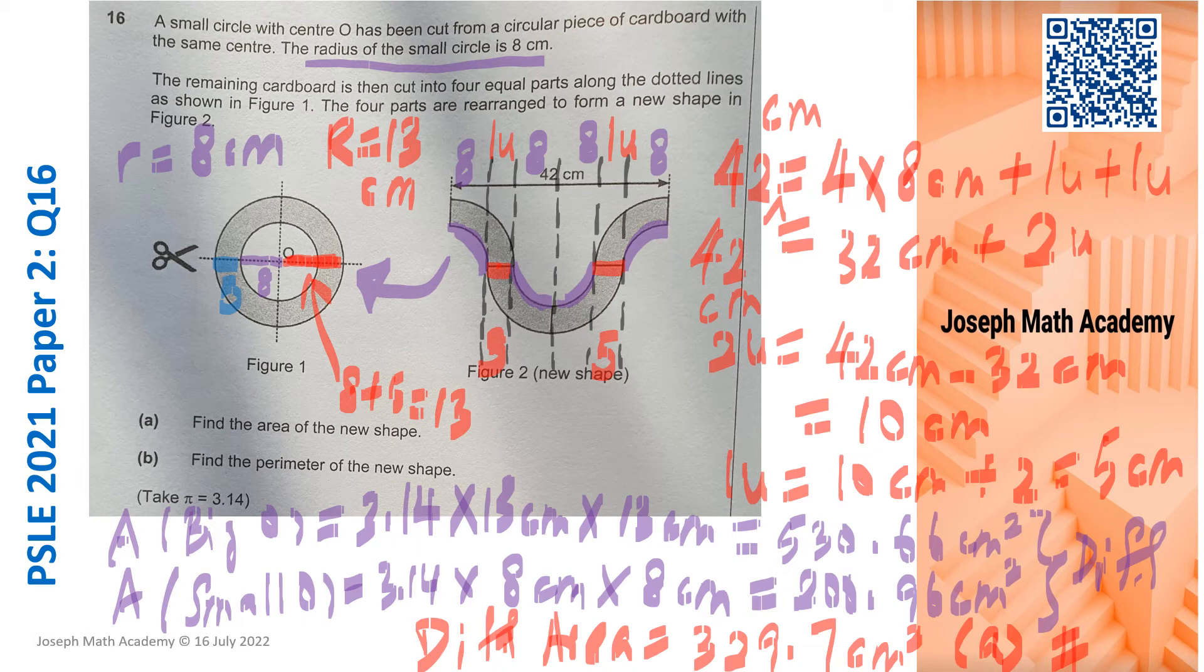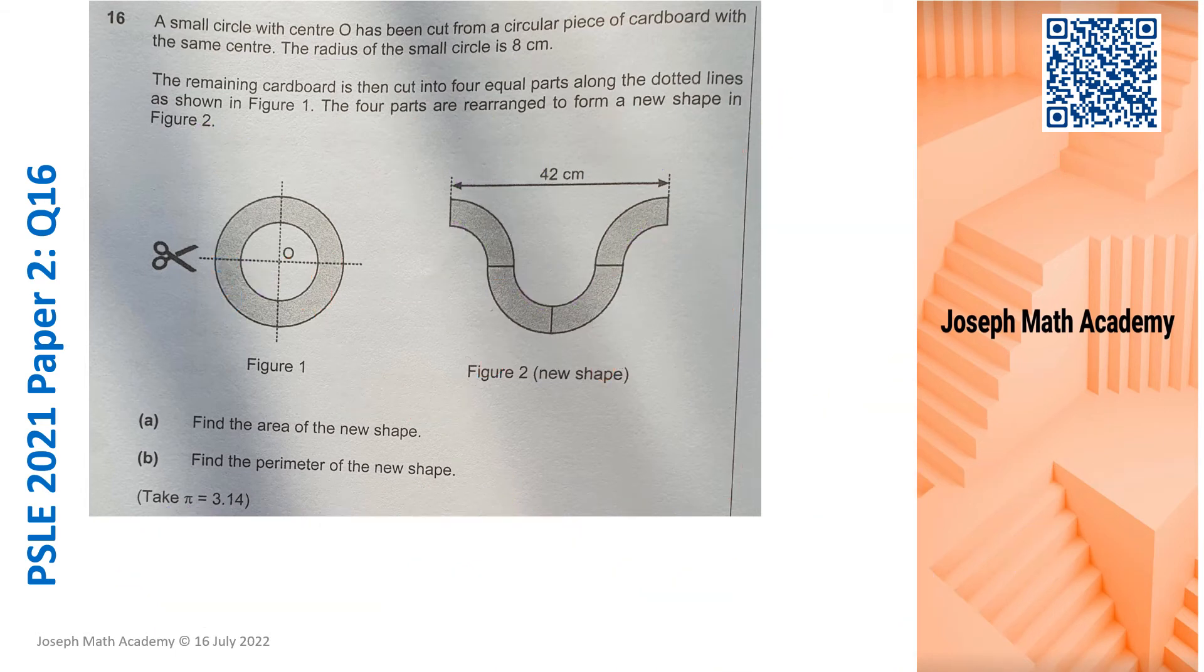Now I can move on to part B. Part B is asking us to find the perimeter of the new shape. Perimeter of the new shape means I have to add this. I'm going to use two colors. The red one represents this one, which is involving the radius 8cm. So those involving radius 8cm, I'm using the one that is in red. Then that one, the one that is involving the big radius 13cm, I'm going to indicate with purple.